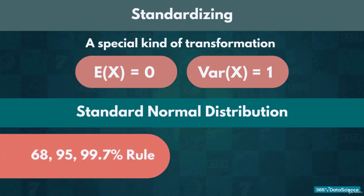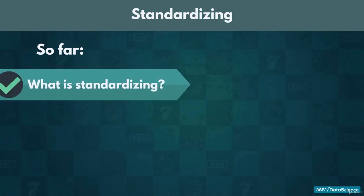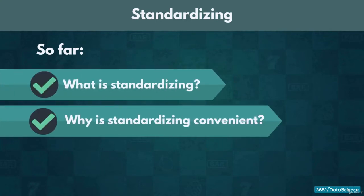In addition to the 68, 95, 99.7 rule, a table exists which summarizes the most commonly used values for the CDF of a standard normal distribution. This table is known as the Standard Normal Distribution table, or the Z-score table. So far we have learned what standardizing is and why it's convenient.